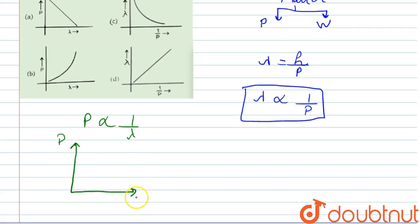This is the p axis and this is the lambda on x axis. Now we know that this is an inverse relation, and for inverse relation the graph is of hyperbola, that is this type of graph.